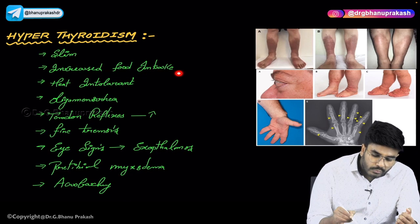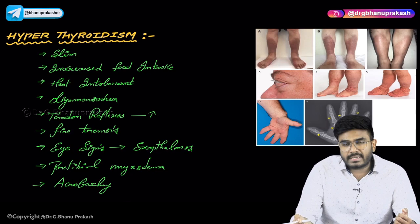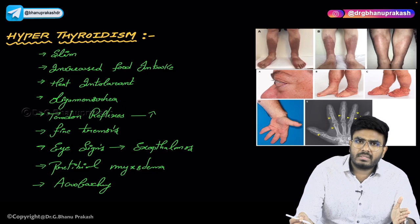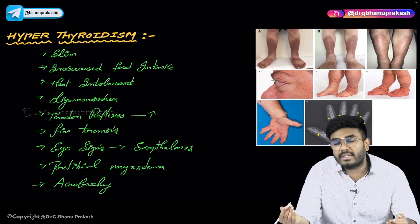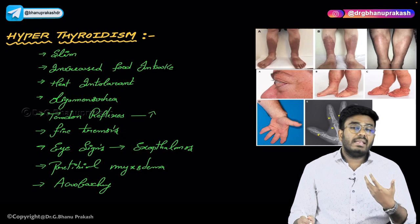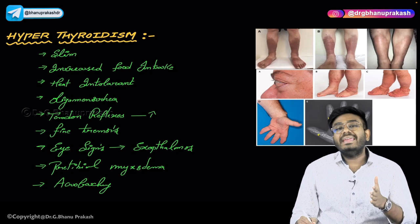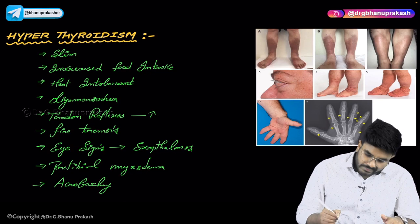Hyperthyroidism is also a heat-intolerant state. Why? Because thyroid hormones are thermogenic hormones. Normal T3/T4 means normal body temperature; increased T3/T4 means increased body temperature. Their body is already getting much warmer, so they cannot live in hot climates — they are heat intolerant. These people love to live in cold places.